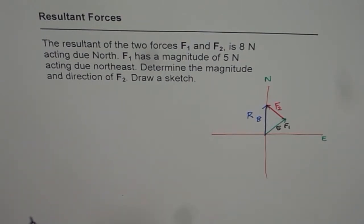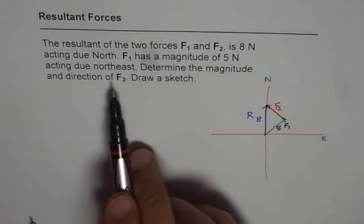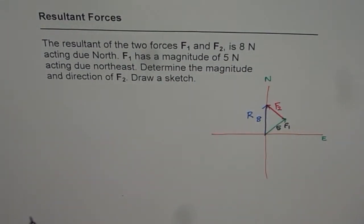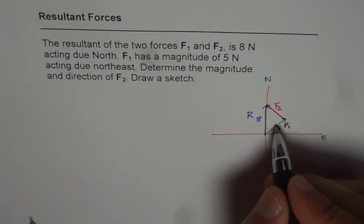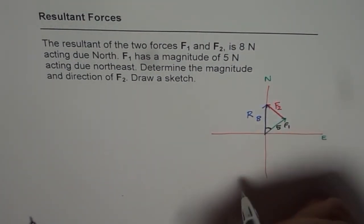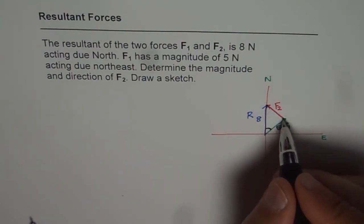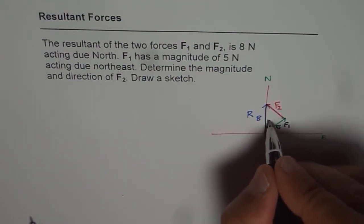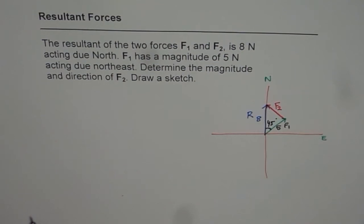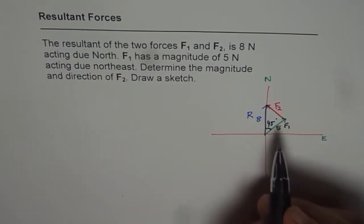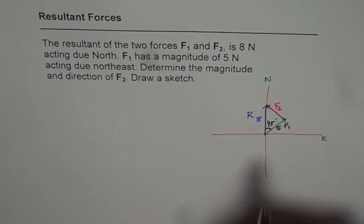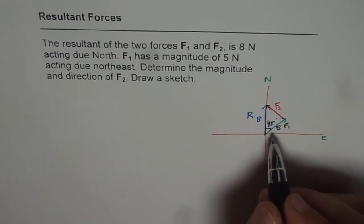Now we need to determine the magnitude and direction of F2. What we are really given here in this triangle is two sides and included angle. Now this angle is northeast with north which is 45 degrees. Since we know two sides and included angle, we can always apply the cosine law and find F2.